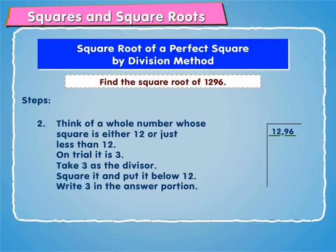Step 2: Think of a whole number whose square is either 12 or just less than 12. On trial, it is 3. Take 3 as the divisor. Square it and put it below 12. Write 3 in the answer portion.